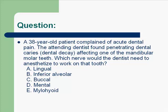A 38-year-old patient complained of acute dental pain. The attending dentist found penetrating dental caries affecting one of the mandibular molar teeth. The nerve the dentist would need to anesthetize is the inferior alveolar nerve — answer B. The IA nerve is a branch of the mandibular division of the trigeminal nerve (V3). It penetrates the mandibular foramen and is the sensory nerve for the mandible and all mandibular teeth.